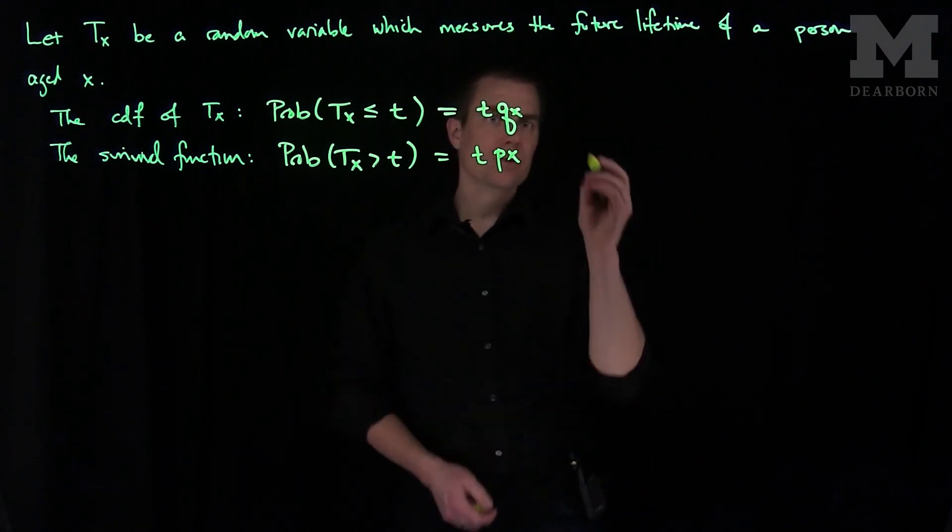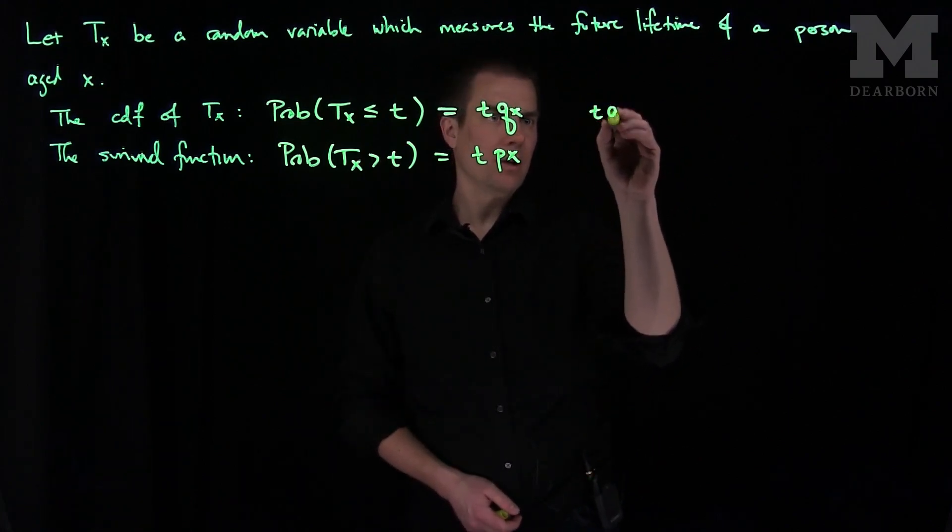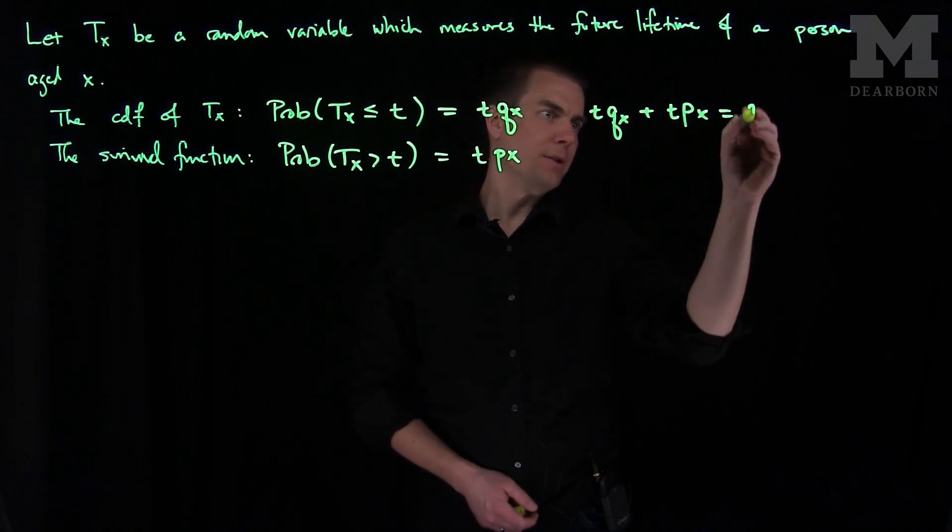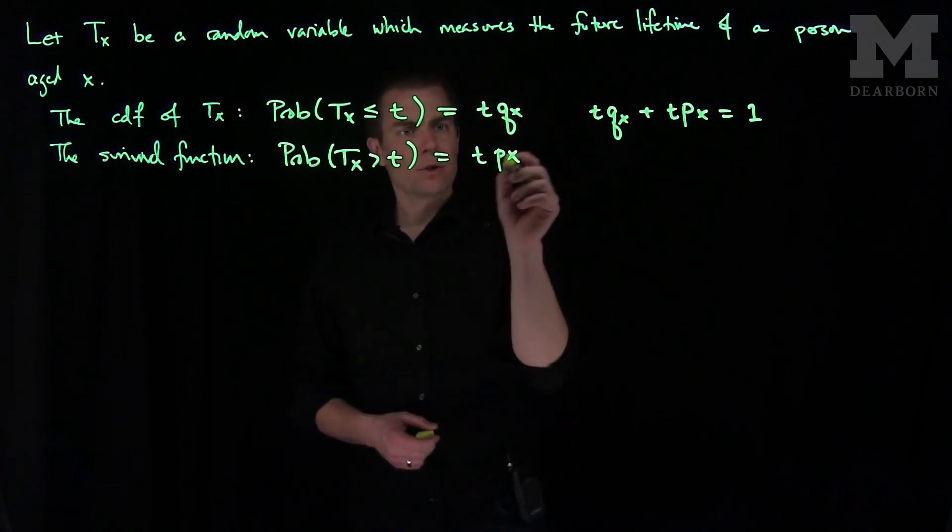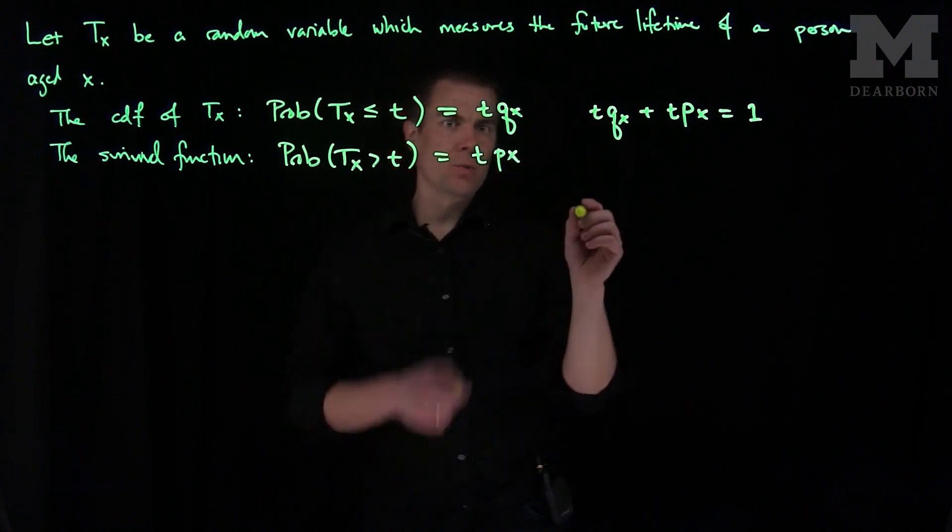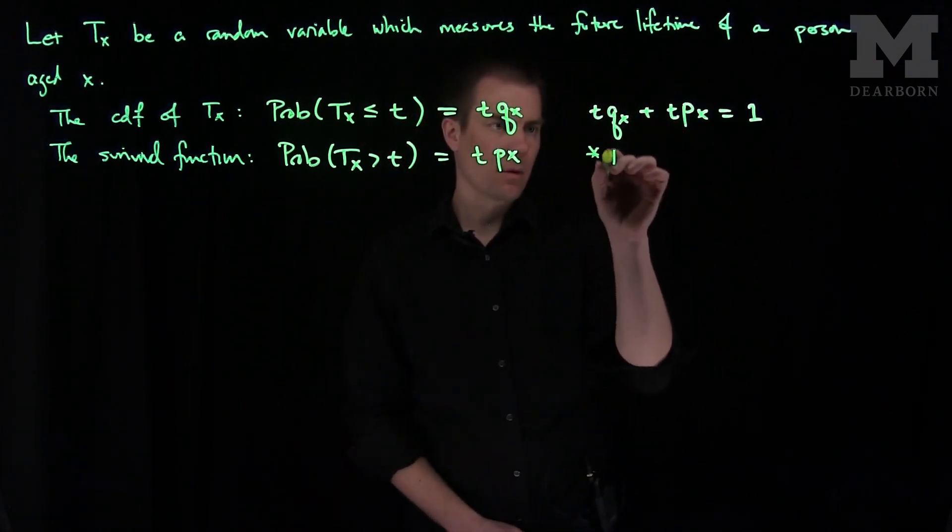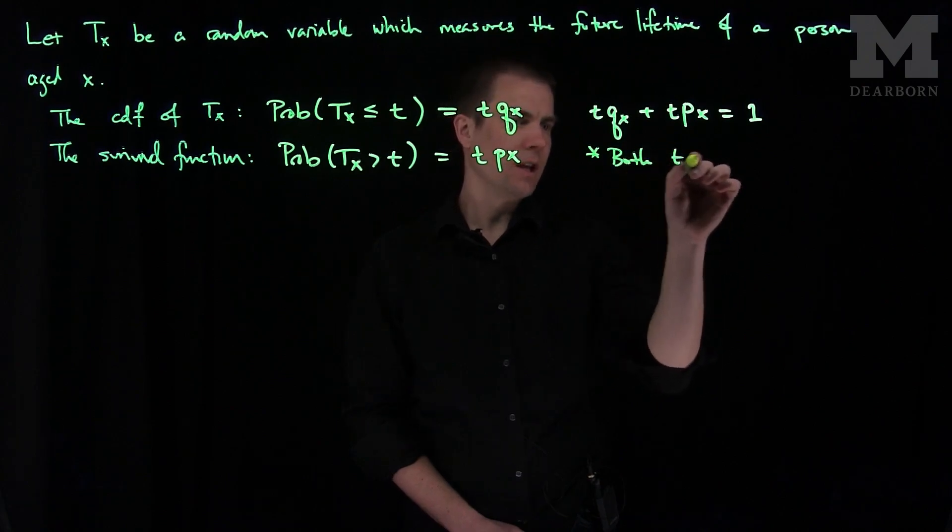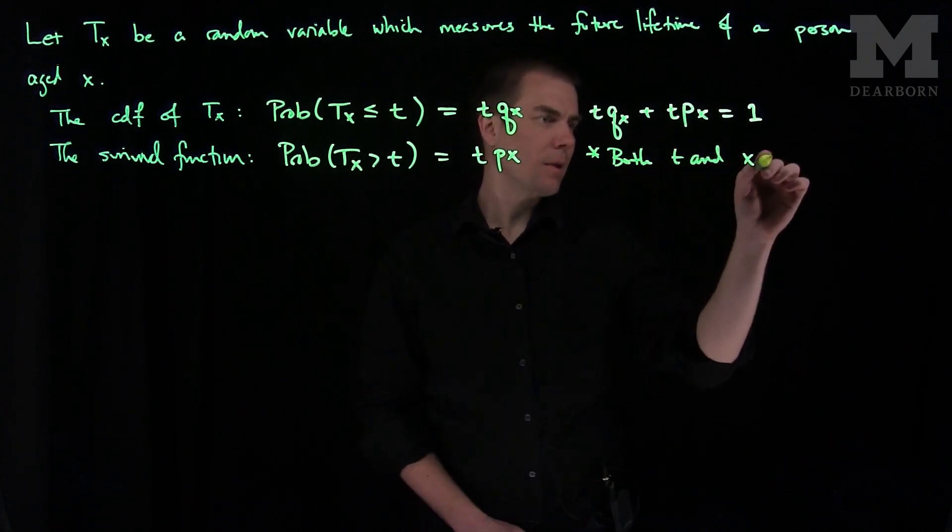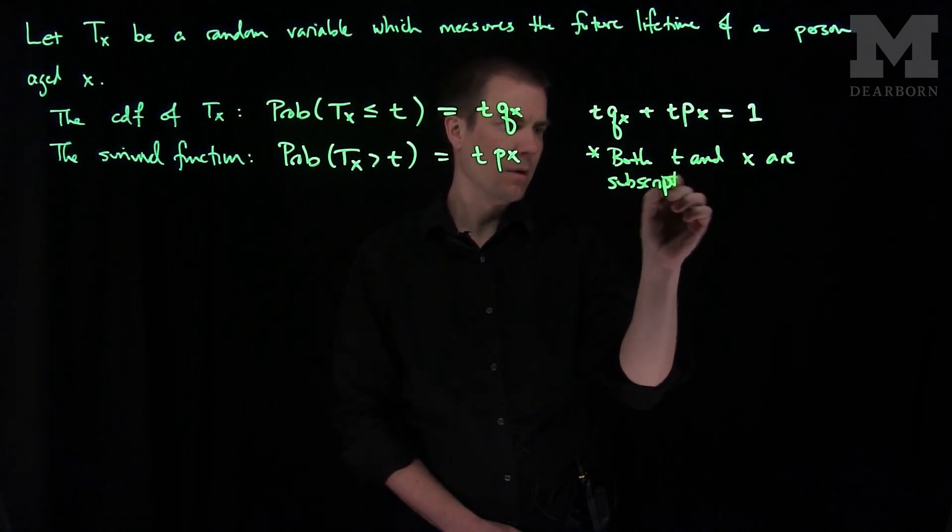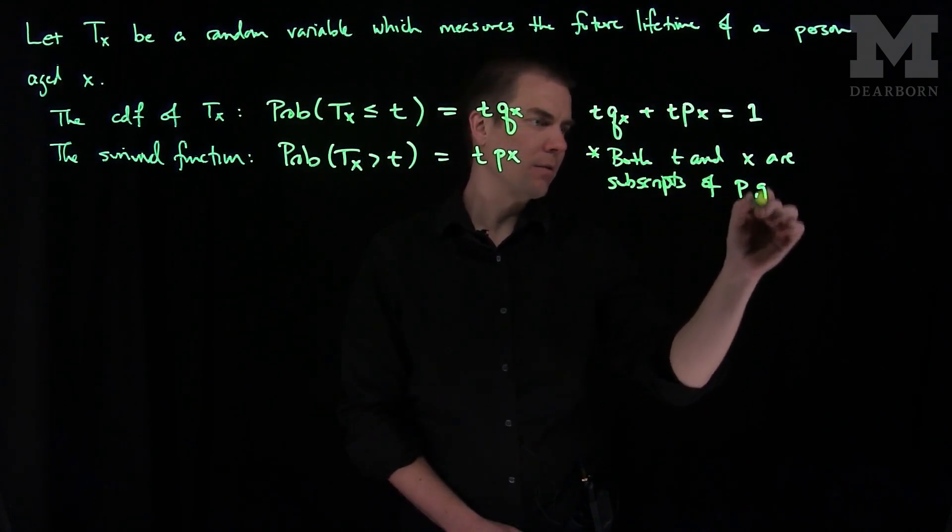From these two observations, we can note that tqx plus tpx equals 1. One other thing to note is that this is the notation where both t and x are subscripts. So here both t and x are subscripts of p and q respectively.